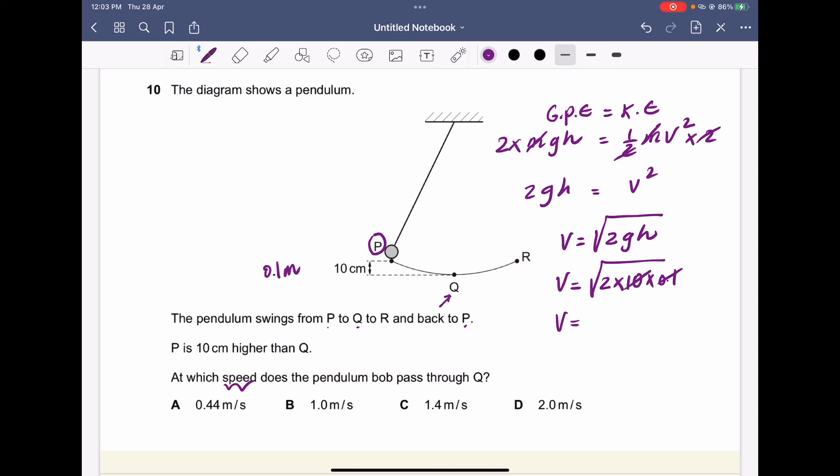0.1 cancels out with the 10, so it's going to be the square root of 2, which is the correct answer: 1.4 meters per second. C is the correct answer for question 10.